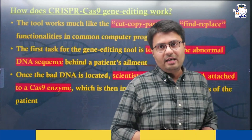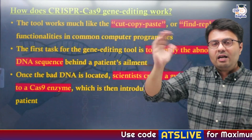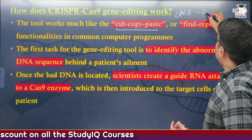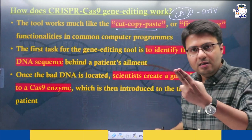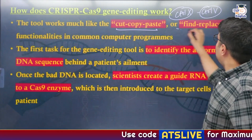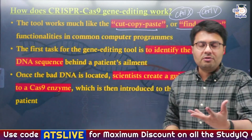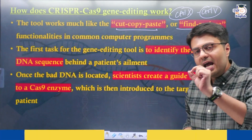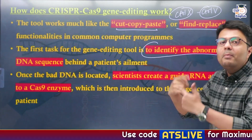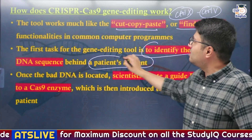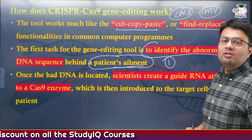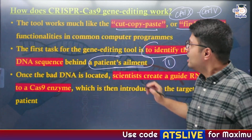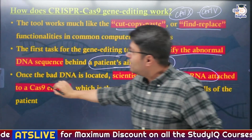The simplest analogy for CRISPR-Cas9 is a computer system where you use cut, copy, and paste using CTRL-X and CTRL-V. So CRISPR-Cas9 is basically a technique that uses a molecular scissor. When a patient undergoes treatment under CRISPR-Cas9, the first task is to identify the abnormality in the patient's DNA sequence that is causing the disease. Once the abnormality is identified, scientists create a guide RNA which gets attached to the molecular scissor.